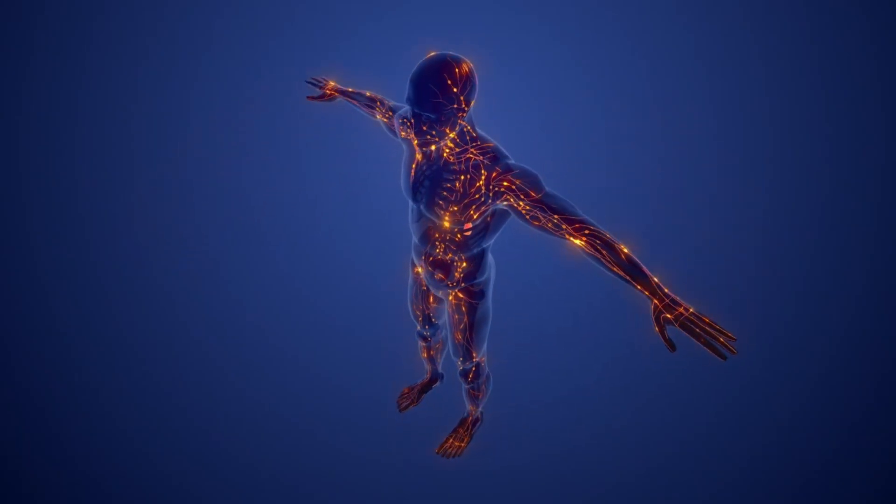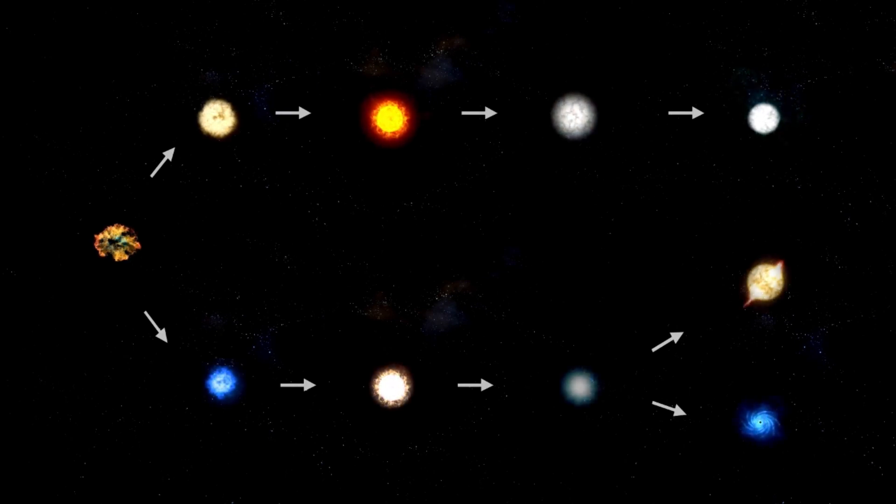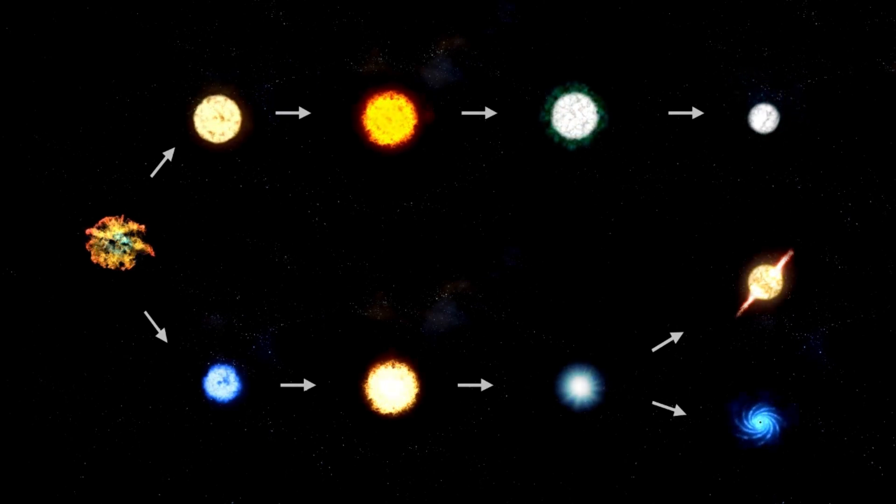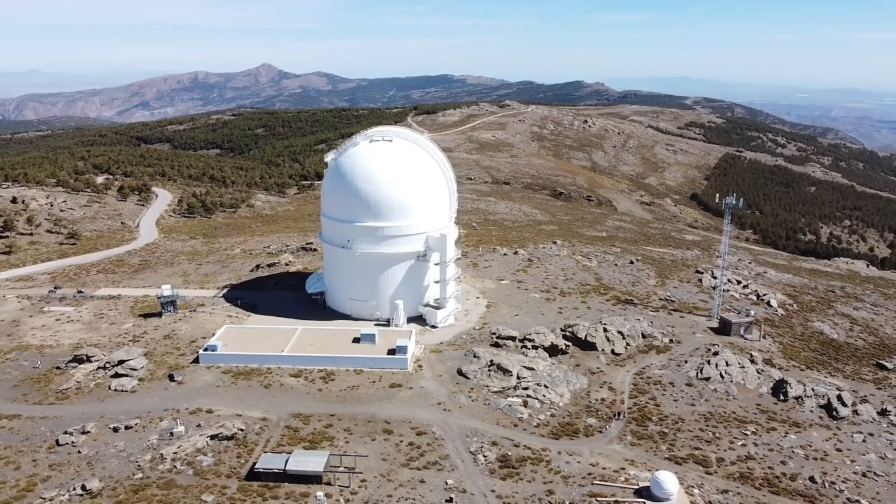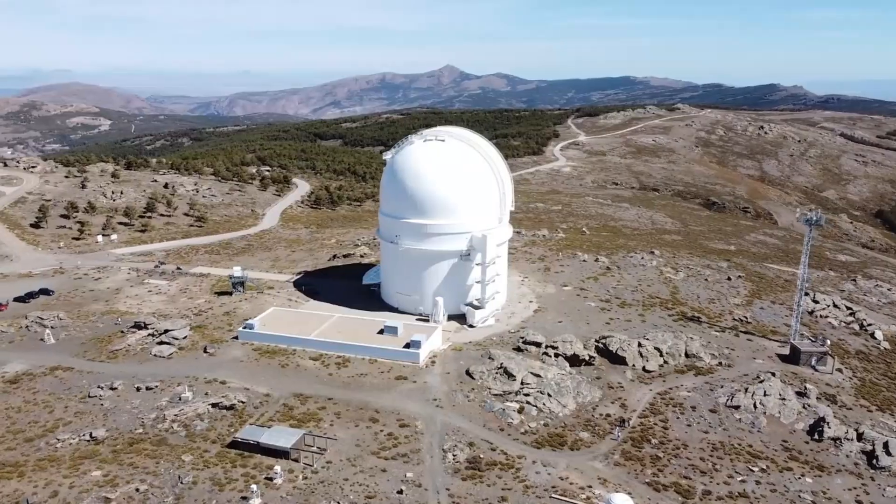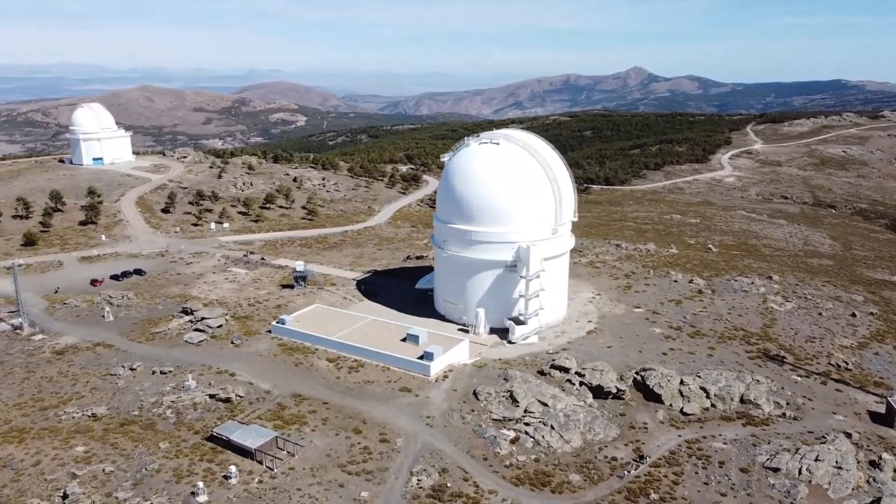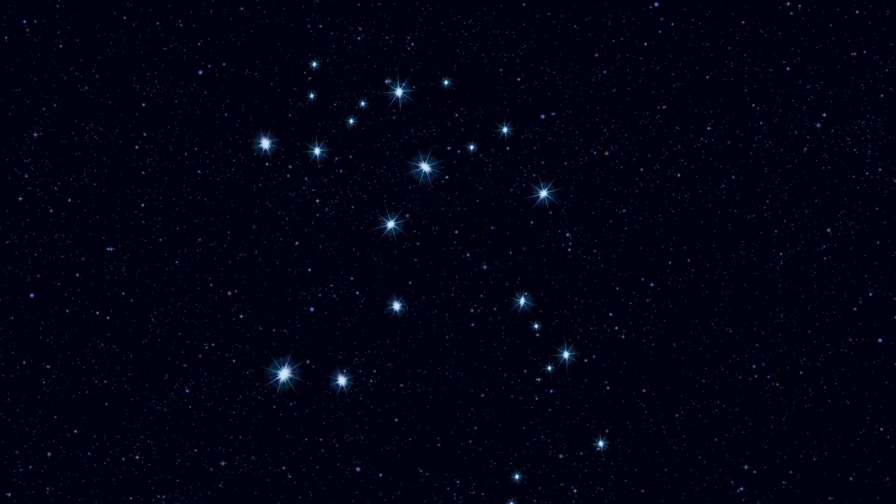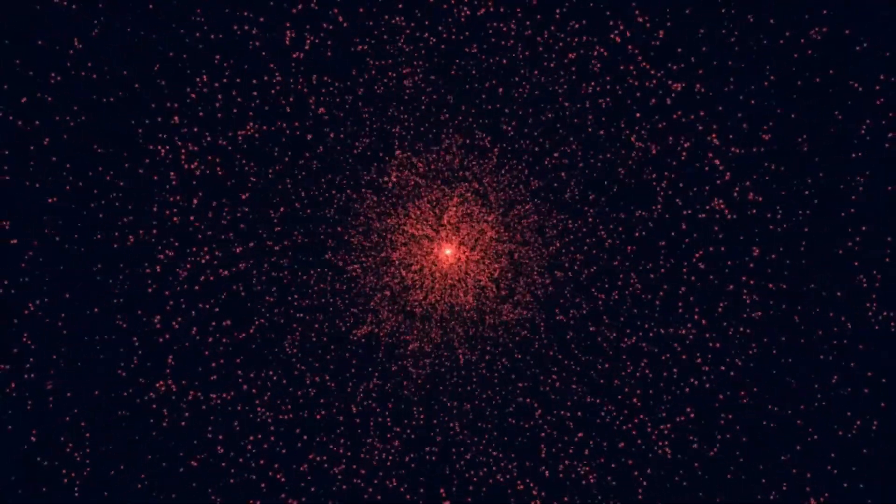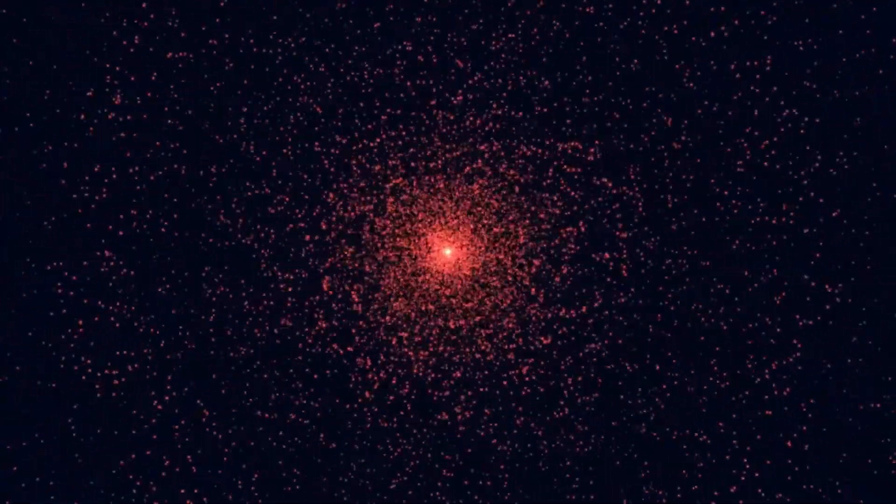Betelgeuse is known to be a pulsating variable star, meaning it experiences natural cycles of expansion and contraction that affect its brightness. As the star expands, it emits more light and appears brighter from Earth. Conversely, when it contracts, its light output dims. Scientists have tracked two primary brightness cycles in Betelgeuse, one lasting approximately 185 days and another that spans about 2,300 days. Yet recent events have deviated from these known cycles in both magnitude and unpredictability.